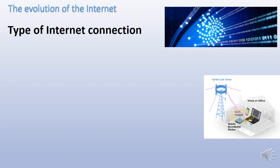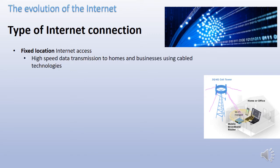We're going to talk about how the internet has evolved, and a lot of how it's evolved has been dependent on the type of internet connection that existed in those days. Today we have fixed location internet access which depends on high speed data transmission. It goes to homes and businesses and uses cable technologies. We use ADSL and many lucky people have fiber these days, and this is called fixed broadband internet access.